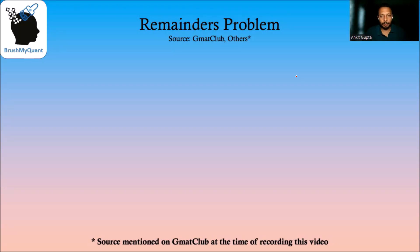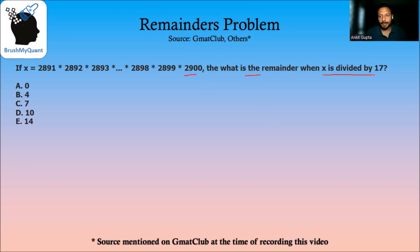Hi, we will be solving a remainders problem today. If x is equal to 2891 multiplied by 2892 all the way till 2900, we need to find what is the remainder when x is divided by 17.